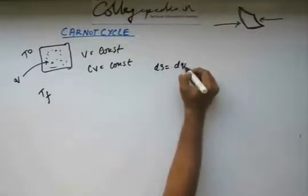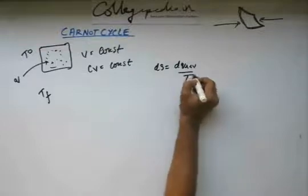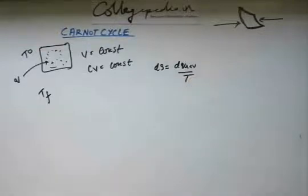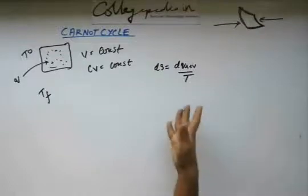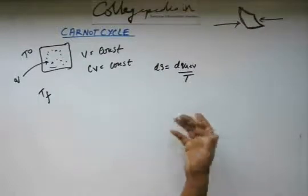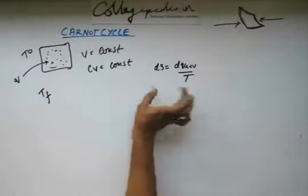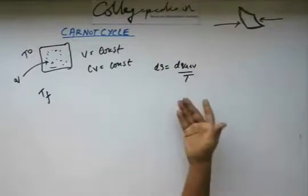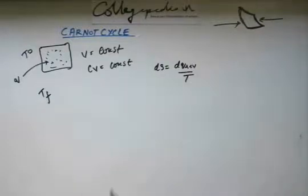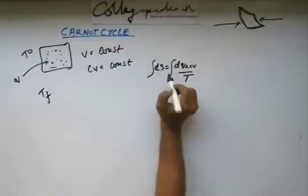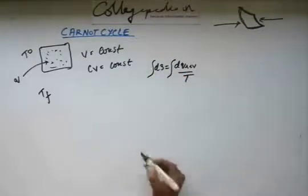Whenever you hear of entropy, you always start from here: dS is equal to dq reversible by T. You always start from here because this is the only formula that we have derived till now. And somehow you have to use this. So this is the definition of entropy.